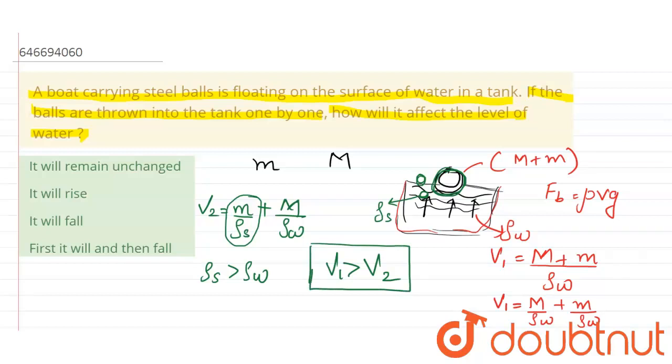So after the ball is thrown, the volume decreases. Therefore the level of water decreases, which means the level of water will fall.